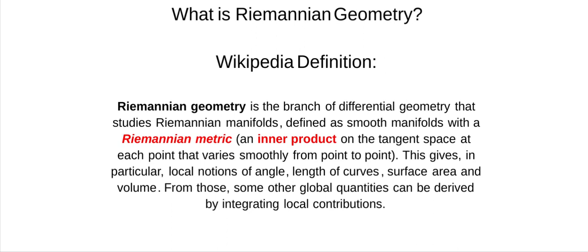Good morning, Relativity friends. In the never-ending ass-kicking I keep getting from general relativity, I'm trying to take it piece at a time, and I've moved on to trying to understand what is Riemannian geometry. I think I've got it now. Here is the definition from Wikipedia.